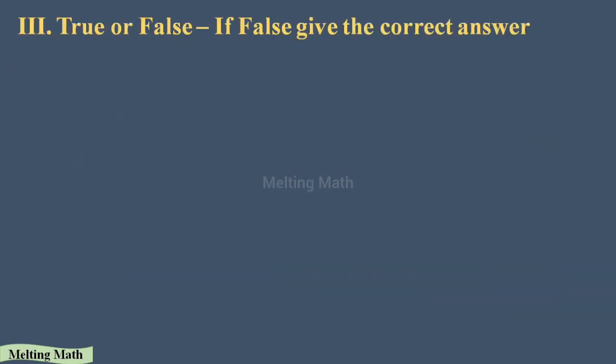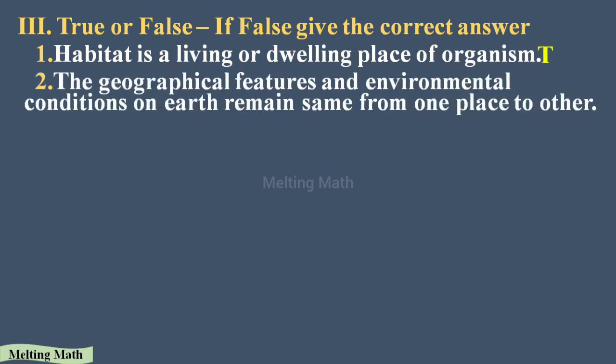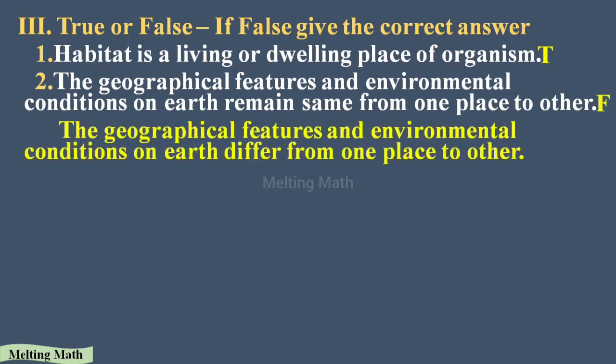Section three: true or false. If false, give the correct statement. Question one: habitat is a living or dwelling place of an organism — true. Question two: the geographical features and environmental conditions on earth remain the same from one place to another — false. The correct statement is that geographical features and environmental conditions on earth differ from one place to another.